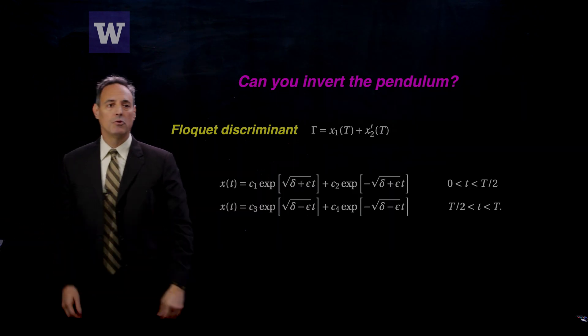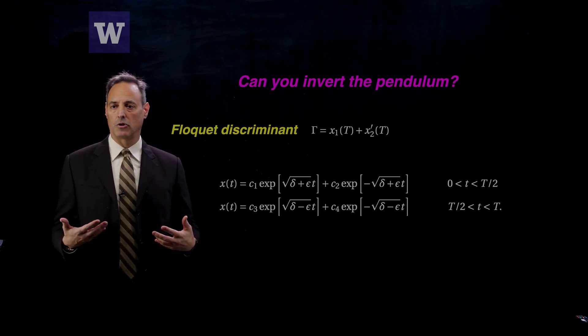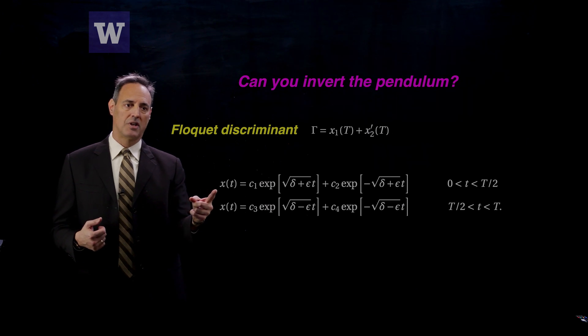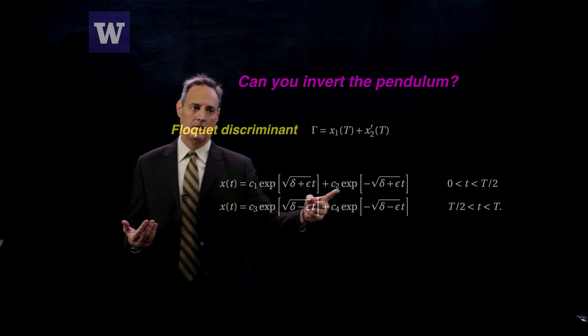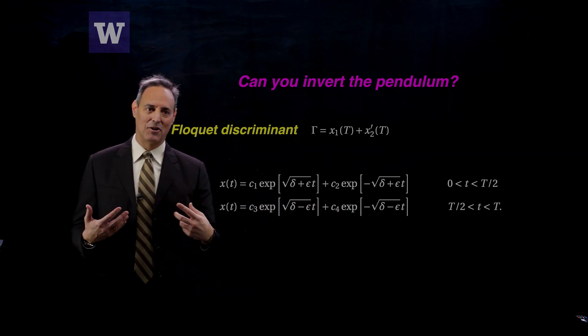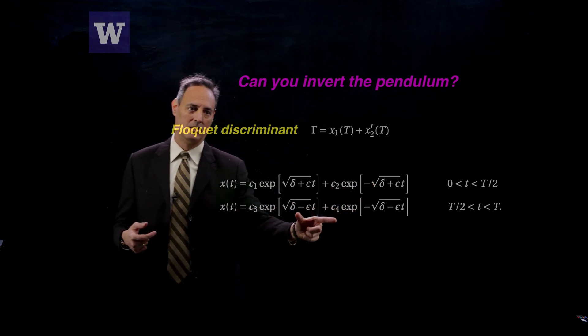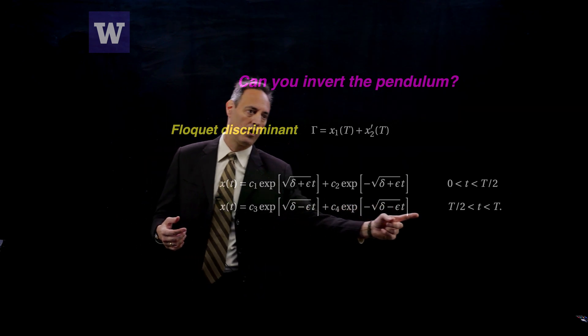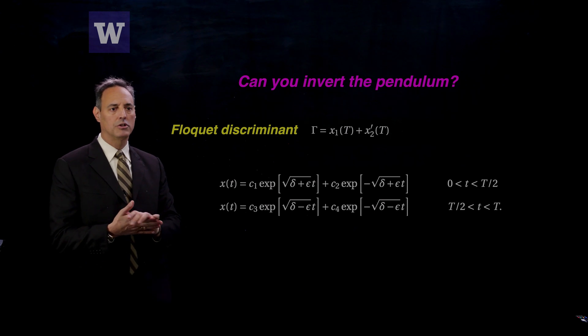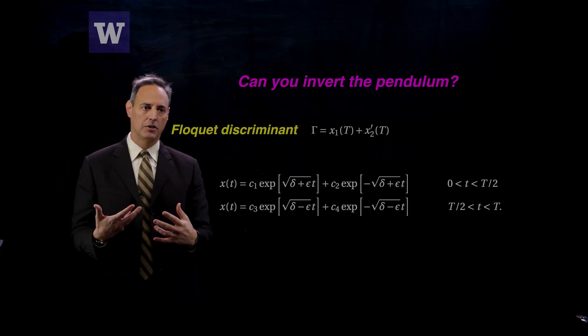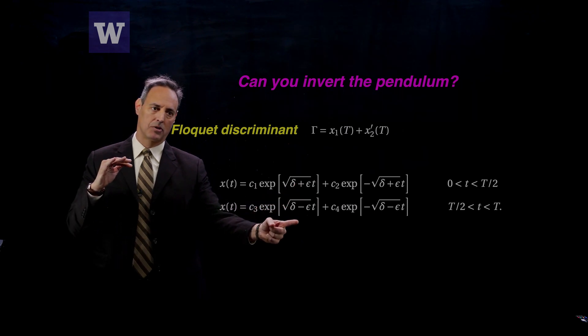So let's go compute these things. So first of all, what are the solutions? Well, your fundamental solutions between 0 to t over 2 is given by here, they're exponentials. Remember, we're near that saddle, so one's a growing exponential, one looks like a decaying exponential. And that's also the case when you're here in the regime t over 2 to t. Remember, you're near the saddle, so you say, I've got these two solutions that have saddle-type structure. Inside of the square root, there's a plus epsilon in the first part of it and a minus epsilon in the second part of it.